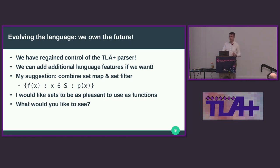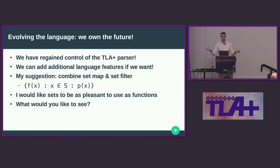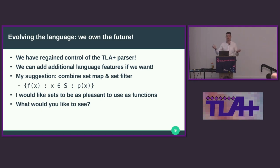Here's a simple suggestion: I would like to combine the set map and set filter operations. I always find myself doing these together and it's really annoying to have to write a nested map inside a filter. I really like Python list comprehensions, which is generally my inspiration here. I would like sets to be as pleasant to use as functions, because I always find myself using functions instead of sets — which is annoying because then you need to define a null value if the function input is mapping to something that doesn't yet exist in the set. What would you like to see? How would you like to see the TLA+ language evolve?